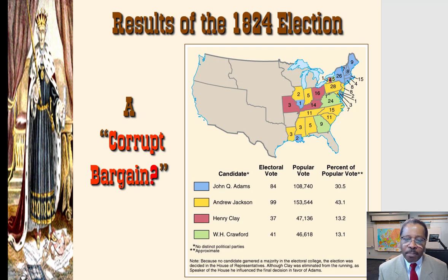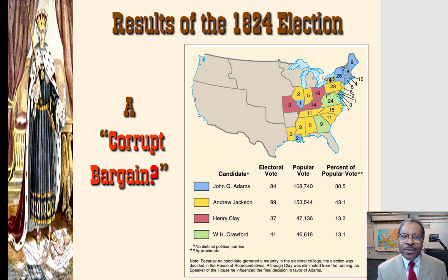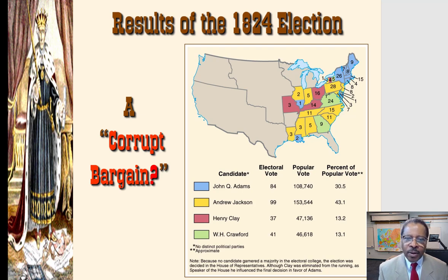Andrew Jackson and his supporters referred to that as the corrupt bargain — that they were robbed, that more people voted for them than any opponent, but the politicians in Washington selected the blue blood John Quincy Adams, the son of John Adams our second president. So Andrew Jackson did feel a kind of class bias, that they preferred the Bostonian blue blood over someone of humble birth. He really played up these class divisions and regional divisions as well.